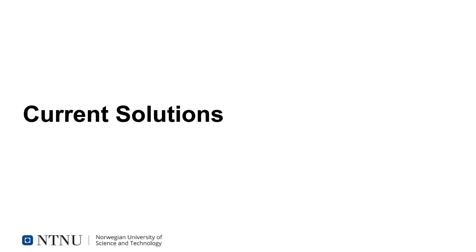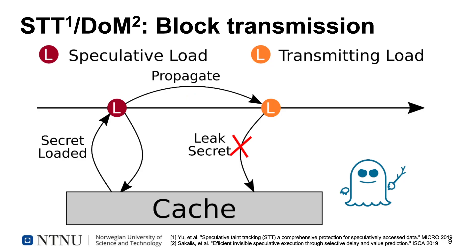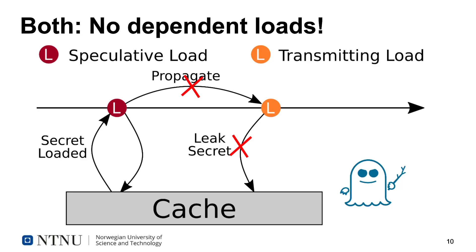Several solutions have been proposed to prevent this. NDA blocks the propagation of potential secrets from speculative loads altogether. STT and delay on miss both instead block the transmitting load from executing. Both of these solutions, as well as others, end up blocking dependent loads, reducing the memory level parallelism available in the system.